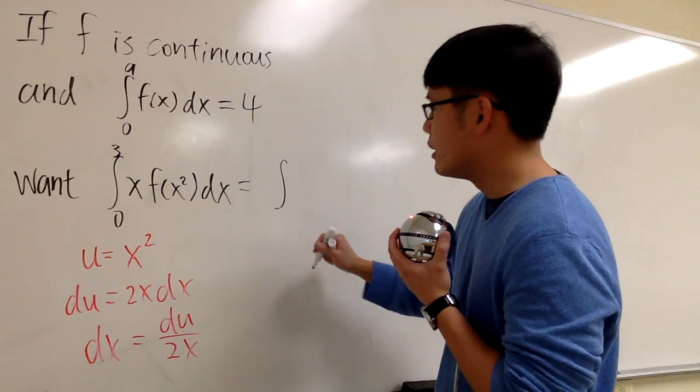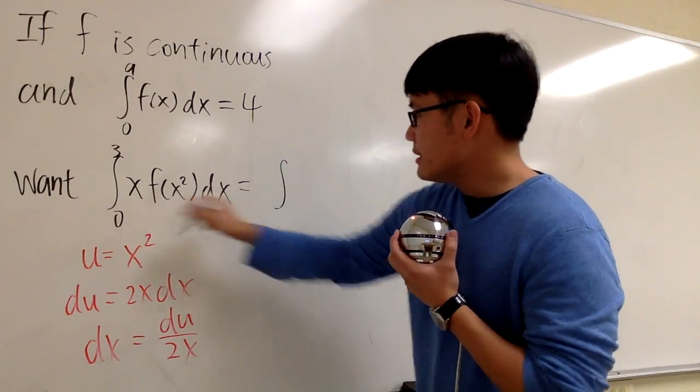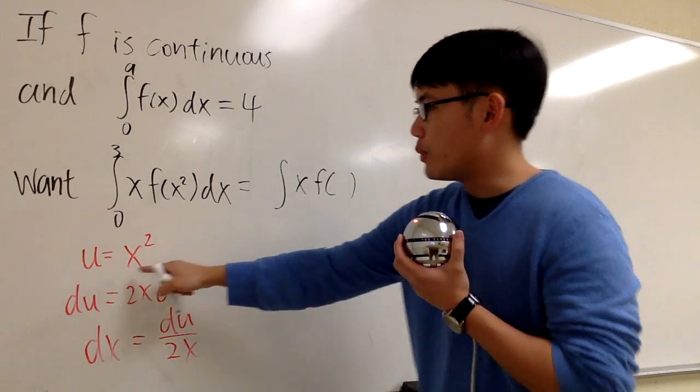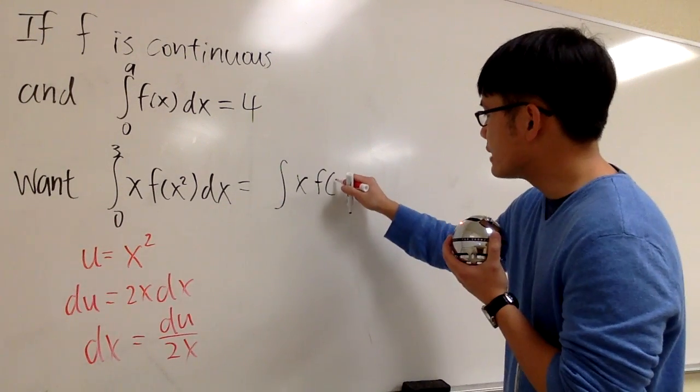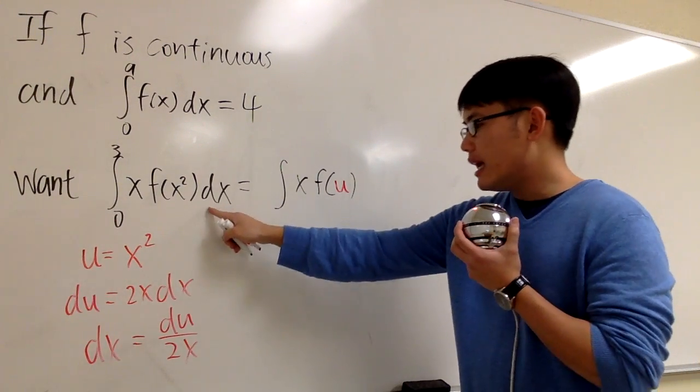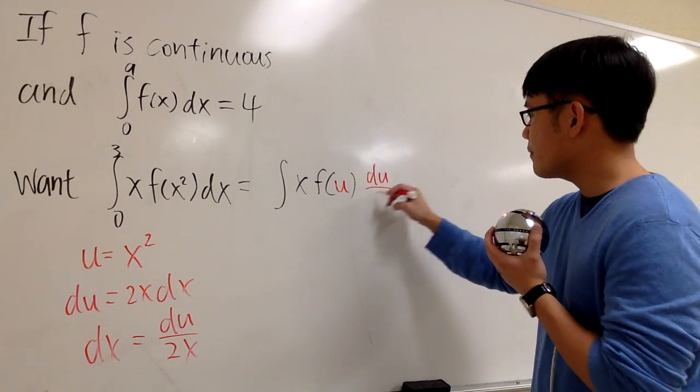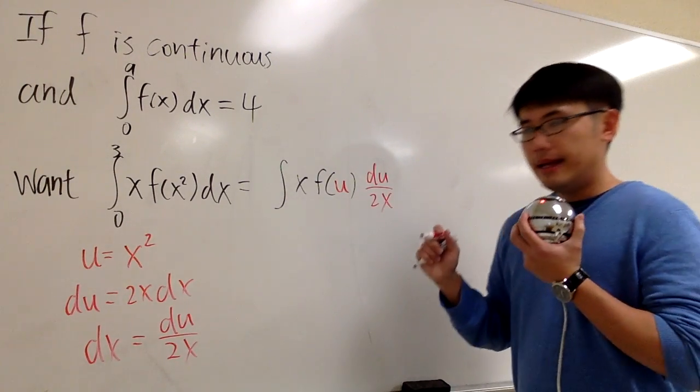We have the integral. Let me just keep it as it is. x, and then we have f(x²) is what we say to be u, so we have the u inside of f, and dx is du over 2x. Let me put this down right here.